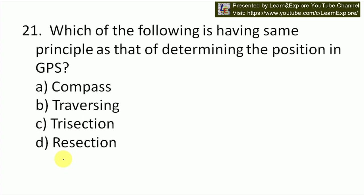Next question: which of the following is having the same principle as that of determining the position in GPS? Options are compass traversing, trisection, and resection. Our answer will be D — resection, as it has the same principle as that of determining position in GPS.